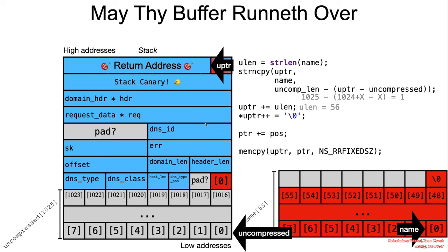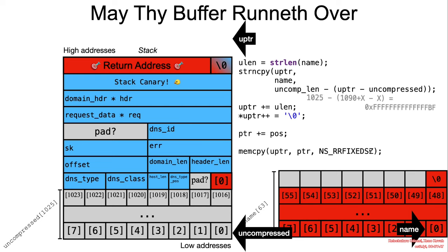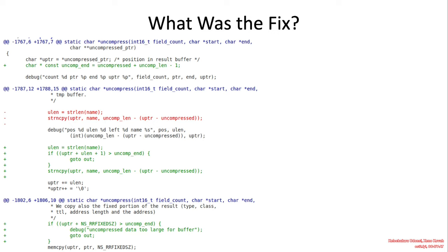And then the next memcpy operation will write arbitrary data from the pointer up until 10 bytes. And basically we have an arbitrary write primitive.